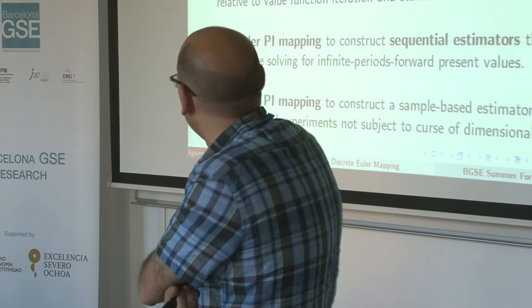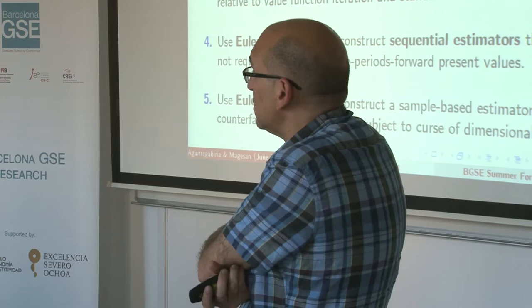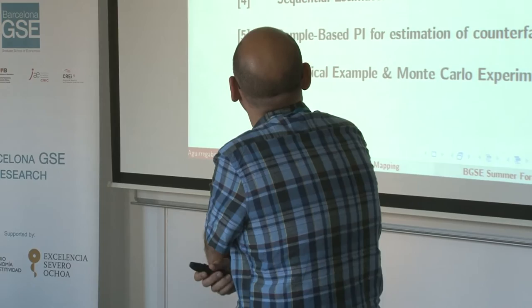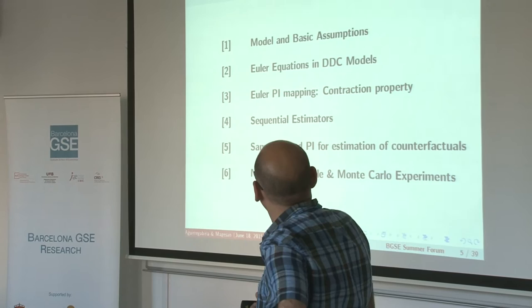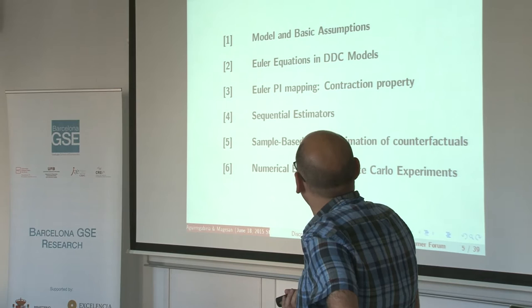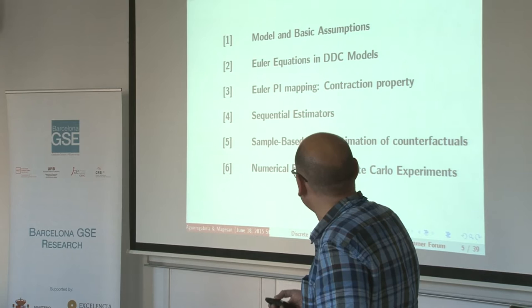Finally, we define a sample-based version of this Euler equation policy iteration mapping that we can use to estimate counterfactual experiments. This sample-based policy iteration mapping gives us root-n consistent estimates of the counterfactual, and they are not subject at all to the curse of dimensionality. I will start briefly with a description of the class of models, describe the derivation of the main ideas for the Euler equations, define the Euler equation policy iteration mapping, the sequential estimator, the sample-based policy iteration for counterfactuals, and hopefully present some numerical experiments.